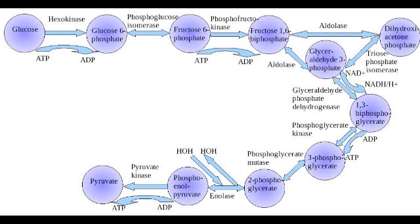Here you can see the glycolysis steps. There are different steps, most of which are reversible — all of them apart from three: the first, the third, and the last steps, which are going to be catalyzed by different enzymes when the process is done in reverse, in gluconeogenesis. The arrows pointing both ways indicate enzymes which can catalyze the reaction in both directions.